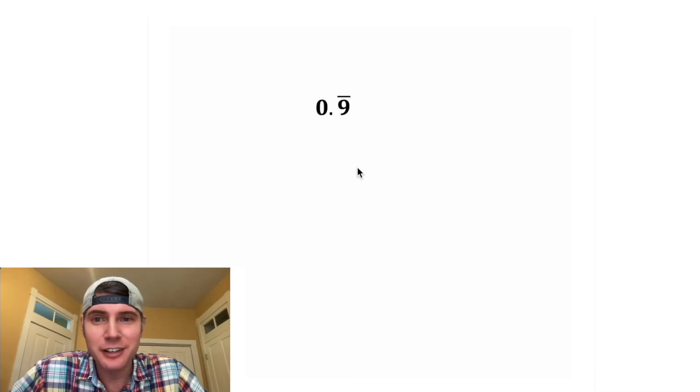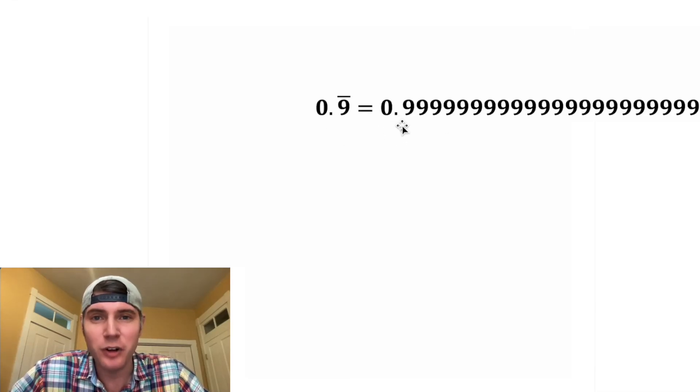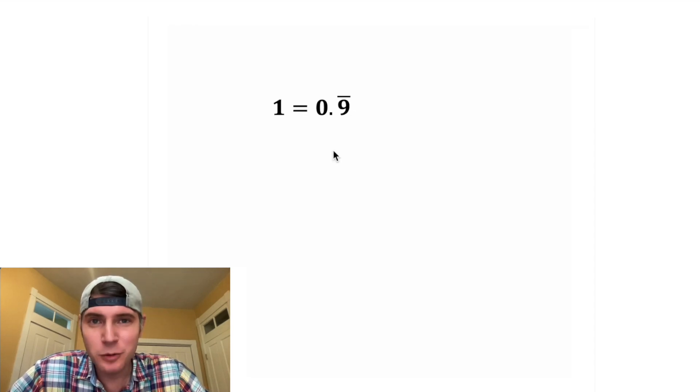Hey guys, let's talk about 0.9 recurring. It means you have a zero with a decimal point followed by an infinite number of nines. This is equal to one.